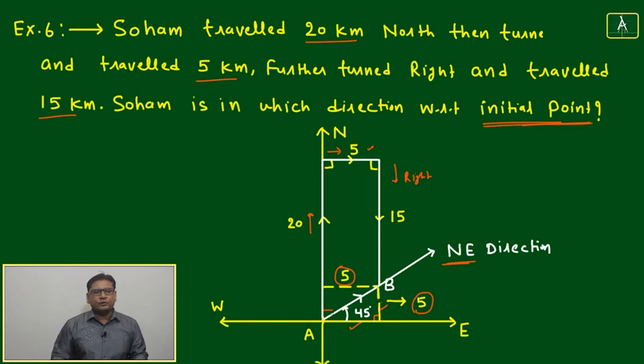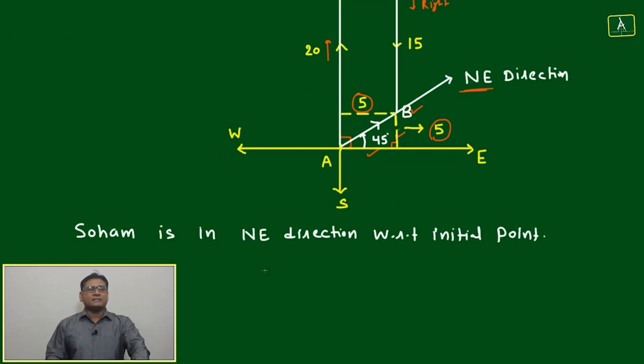Total is 90 degrees, 45 degrees will be northeast direction. This means the position of B with respect to A is in northeast direction. Soham is in northeast direction with respect to initial point.